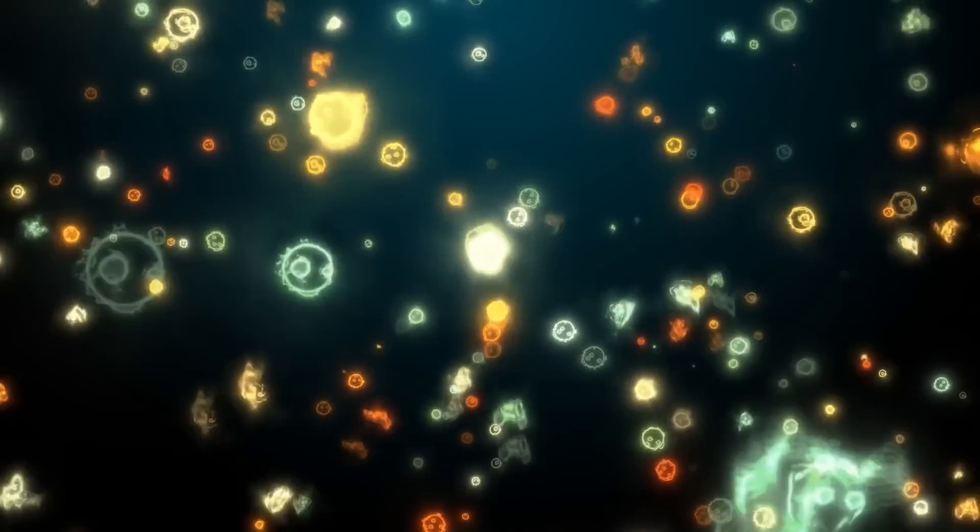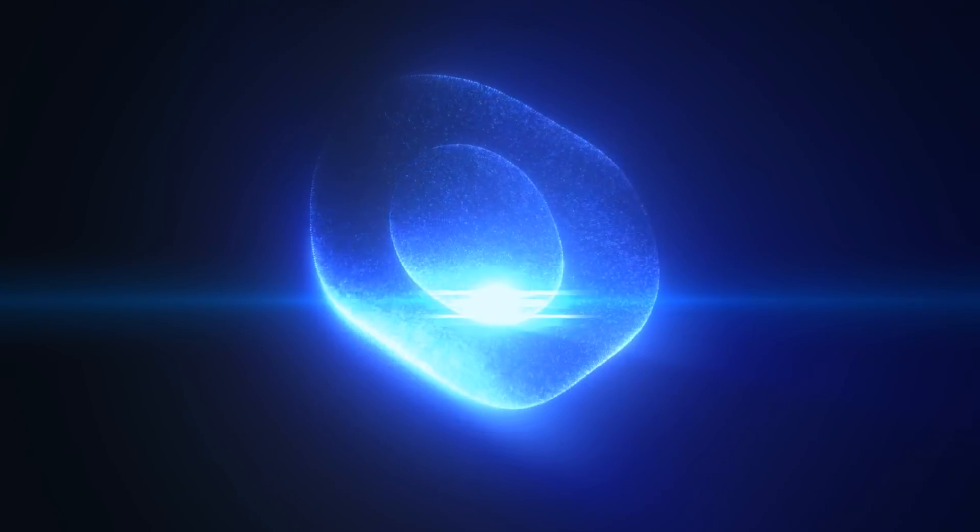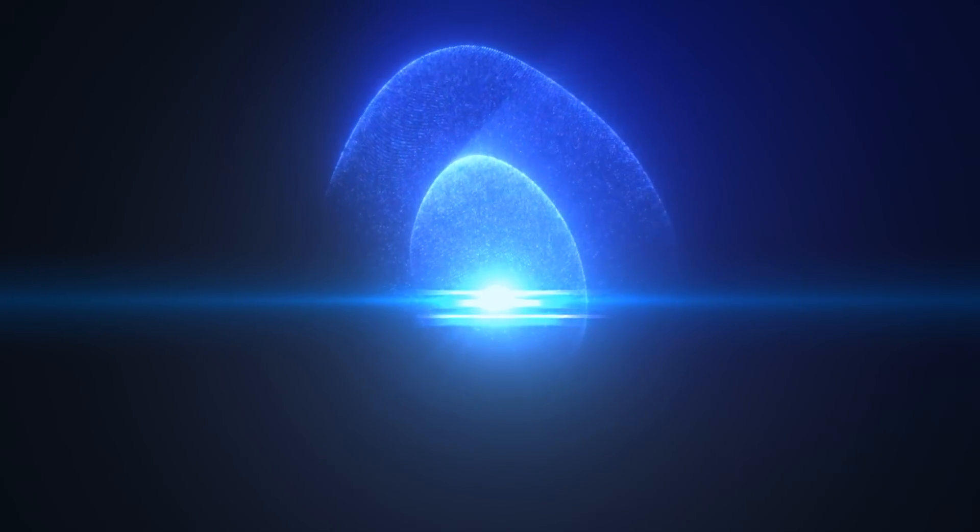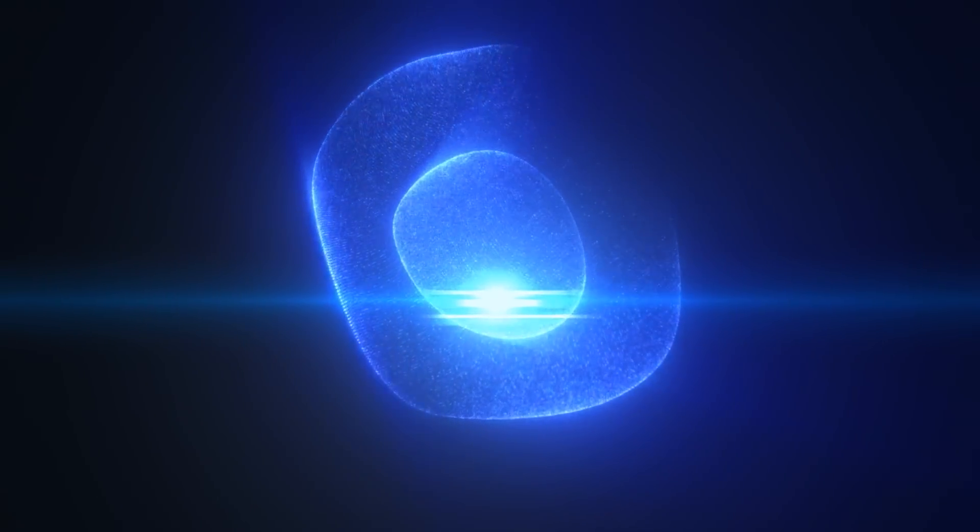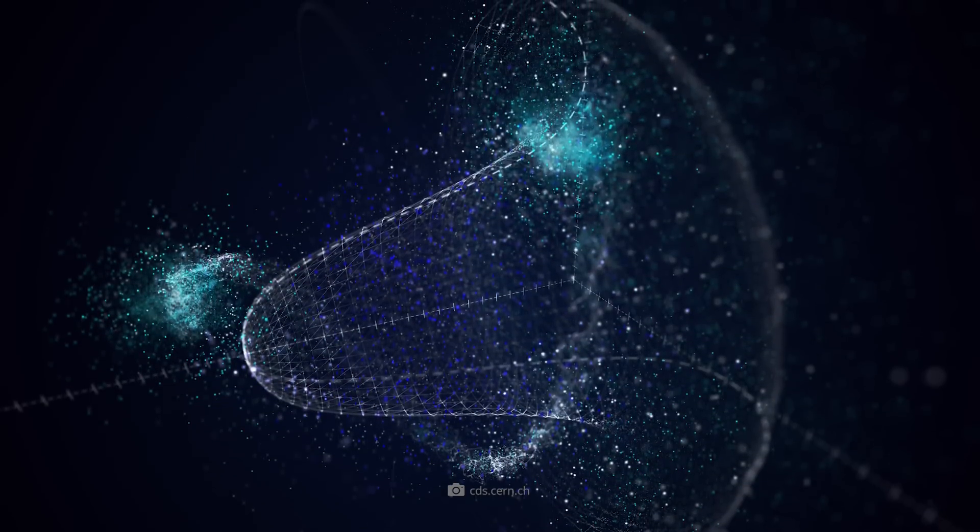But how is it then that not all carrier particles have mass? After all, it's only their masslessness that allows photons and gluons to move at the speed of light. Well, the so-called Braut-Englert-Higgs mechanism also has an answer to this.